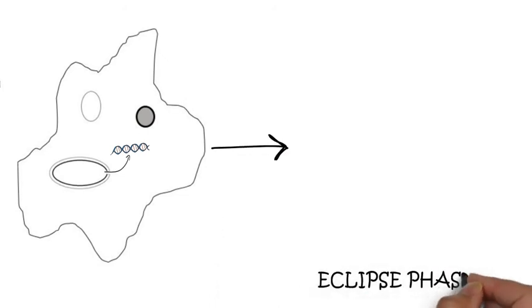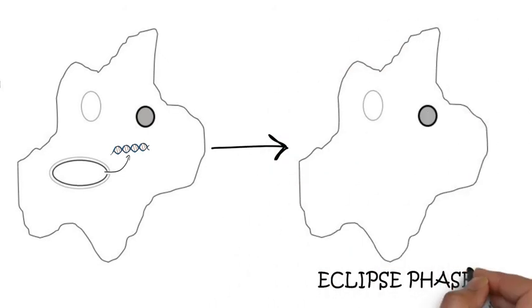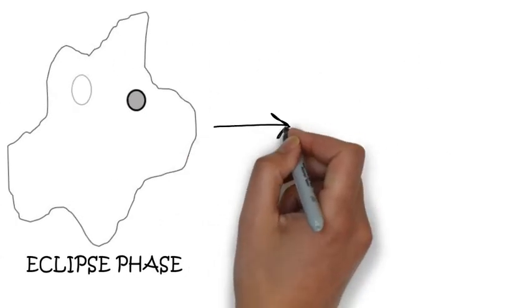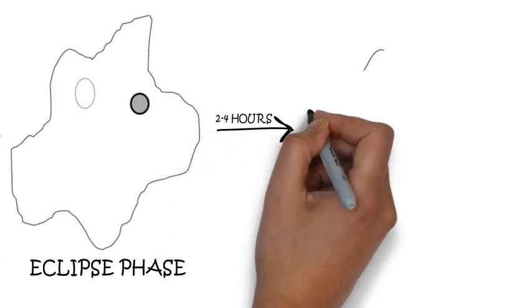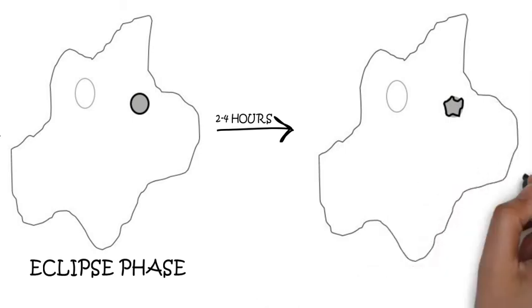This is followed by an eclipse phase where the contents of the virus become invisible. 2 to 4 hours later, the host nucleus loses its spherical appearance. The nuclear envelope develops multiple invaginations.